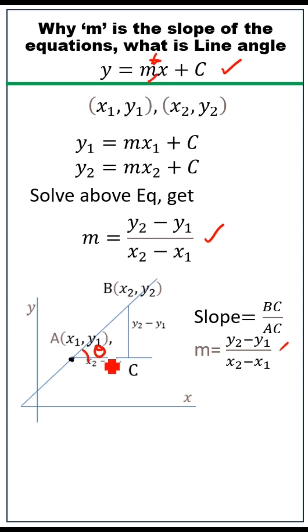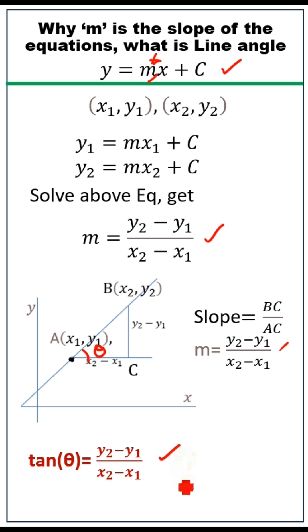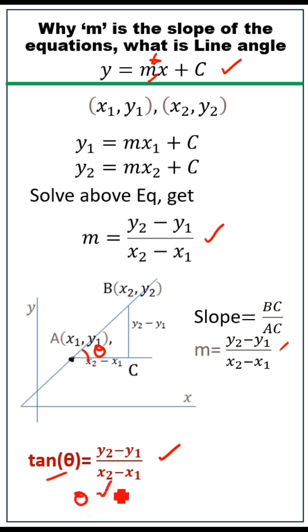Theta is the angle of the line. Tan theta can be written as y2 minus y1 by x2 minus x1. So tan theta is the slope of the line.